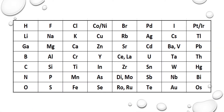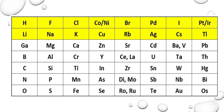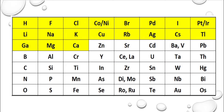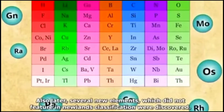However, this classification had its own share of shortcomings. The main points being that Newlands could arrange elements only up to calcium out of the total 56 elements known, after which the elements did not show similar properties. Also, later several new elements which did not feature in Newlands' classification were discovered.